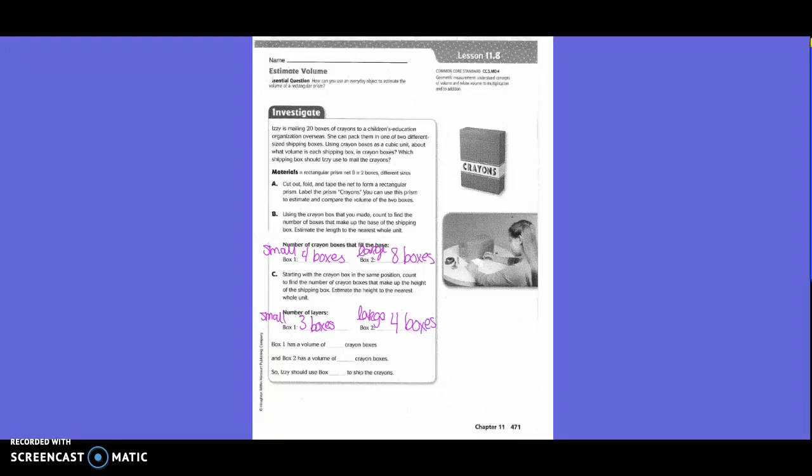Box one has a volume of, so we would take four times our three layers and get what? Twelve. So it takes about 12 crayon boxes to fill our small basket. And box two has a volume of 32 crayon boxes. So Izzy should use box two, because if she used box one, would she be able to get them all in there? No.